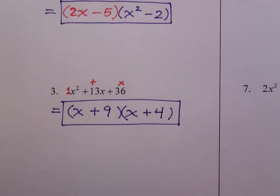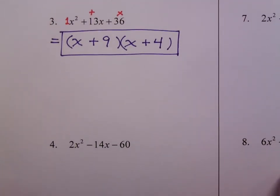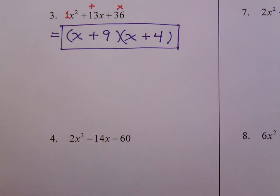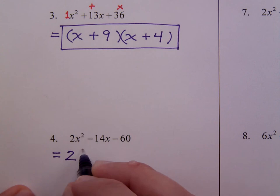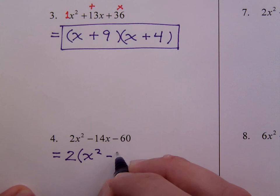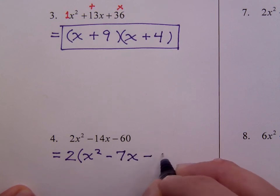All right, let's look down at number 4. Now, what you should see here with number 4 is that all of these coefficients and even the constant term are even. That means they have a common factor, at least a common factor of 2. So we can factor out the 2. We want to factor out the 2. What's left will be x squared minus 7x minus 30.